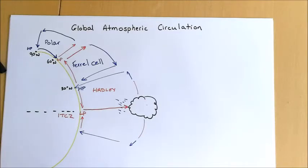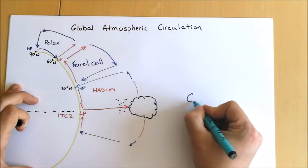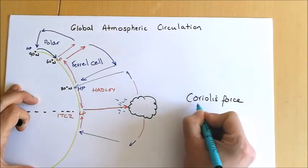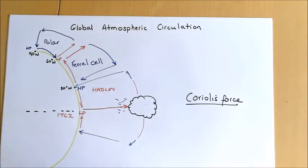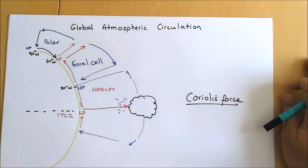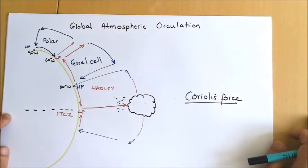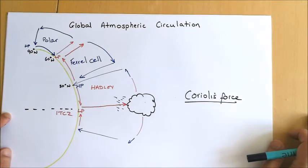The global atmospheric circulation is also closely linked to the tracks or direction of movement of our hurricanes, due to something we refer to as the Coriolis force. The Coriolis force is basically the bending or diversion of winds in the atmosphere caused by the rotation of the Earth. It doesn't actually exist right on the equator, which is why you won't find tropical storms or hurricanes forming any closer to the equator than five degrees north or south.